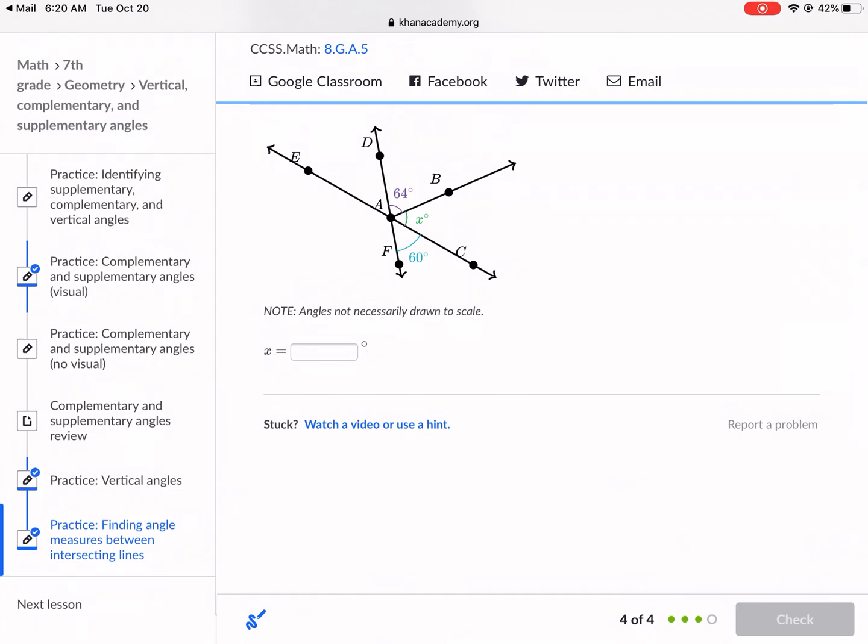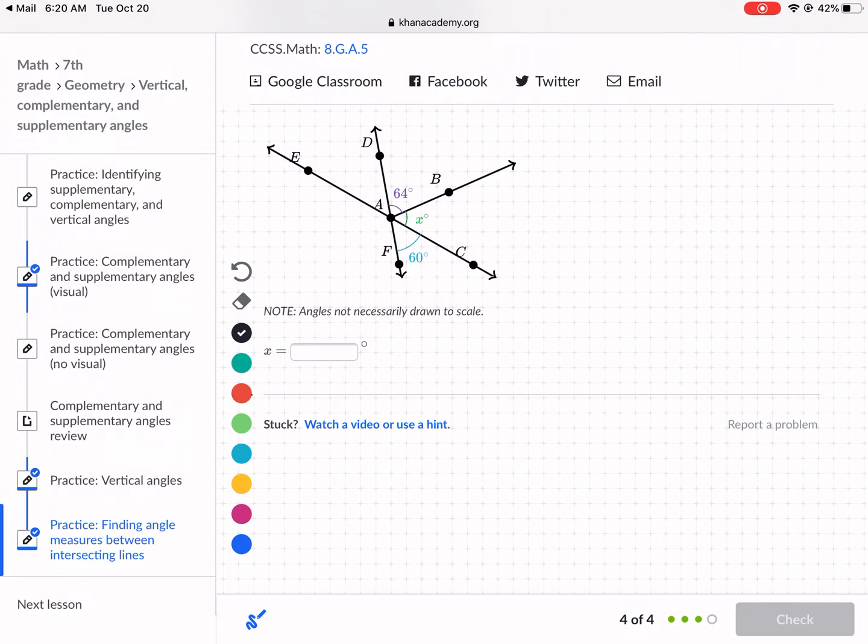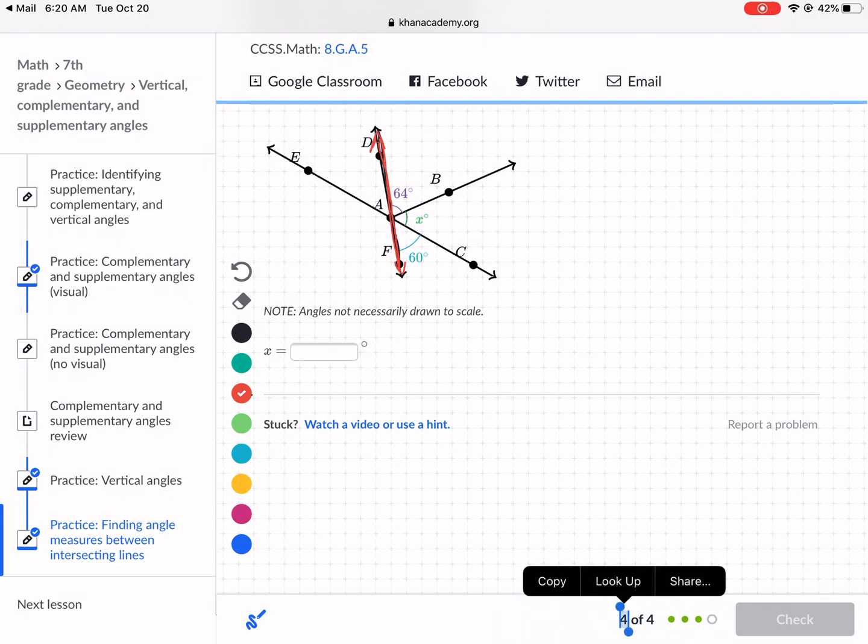One more. Looks like a similar scenario here where we have three angles that compose this linear relationship. So it looks like we have line DF here. And then we have three angles composing line DF. And that is 64 plus x plus 60 equals 180. So these need to equal up to 180 because it's a straight angle.